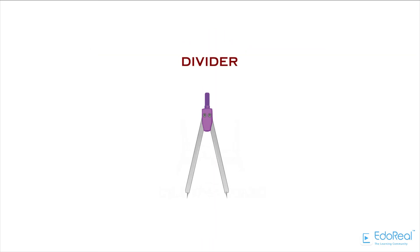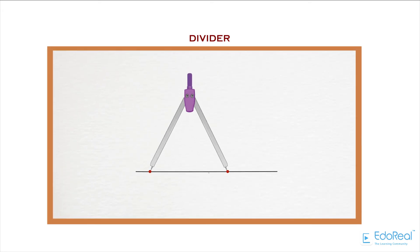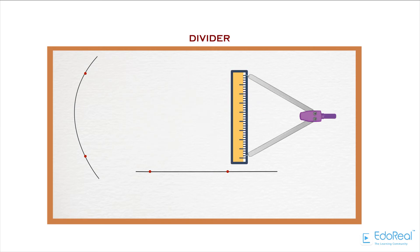The divider looks like a compass, but the difference is the two legs of the divider are provided with needles. This is used to divide a line or curve into equal parts. It is also used to check the measurements.